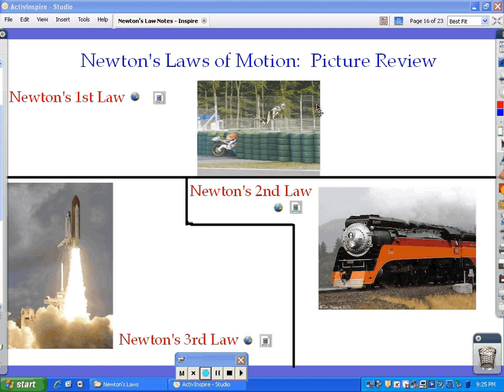Newton's Second Law, the train, F equals ma. What's it really mean? It really means it takes a tremendous amount of force to move something with a large mass fast. That's what it means. It can be moved, and it can move fast; it just takes a tremendous amount of force.